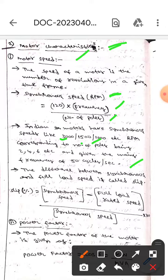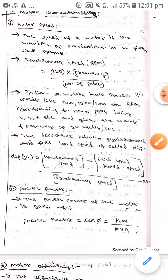The difference between the synchronous and full load speed is called slip. Slip percentage equals synchronous speed minus full load rated speed divided by synchronous speed times 100. The next characteristic is power factor.